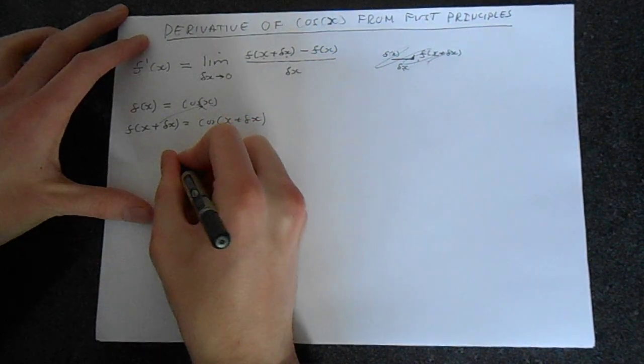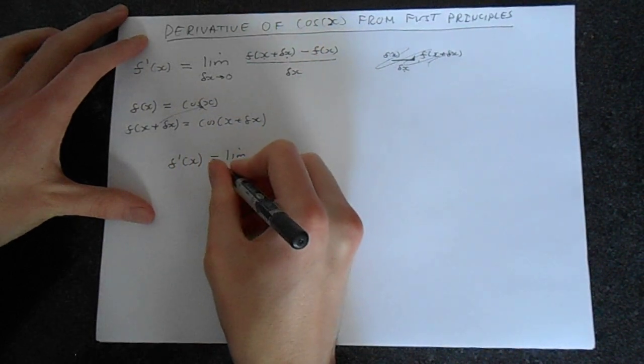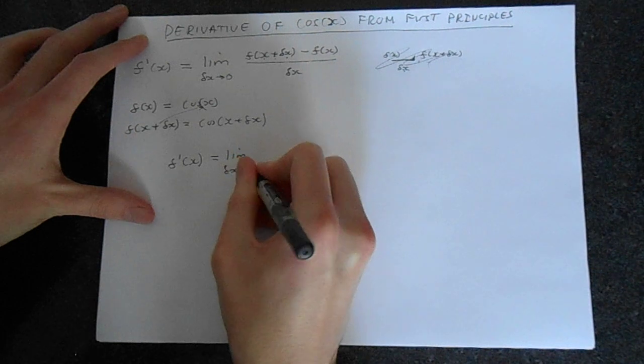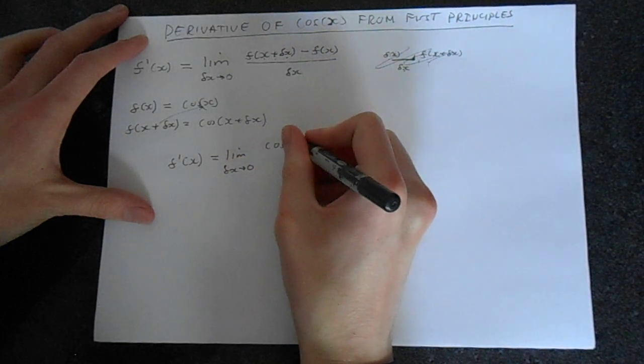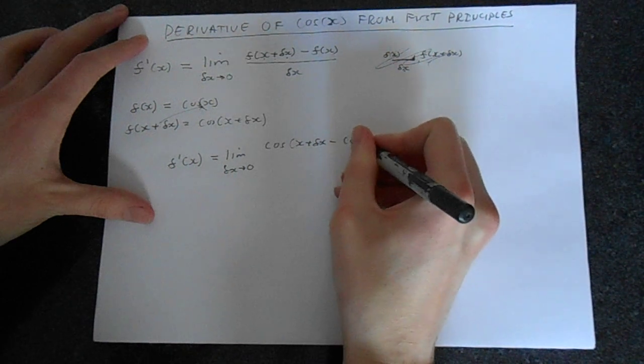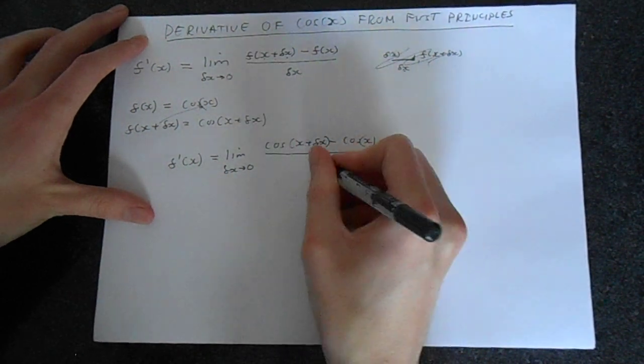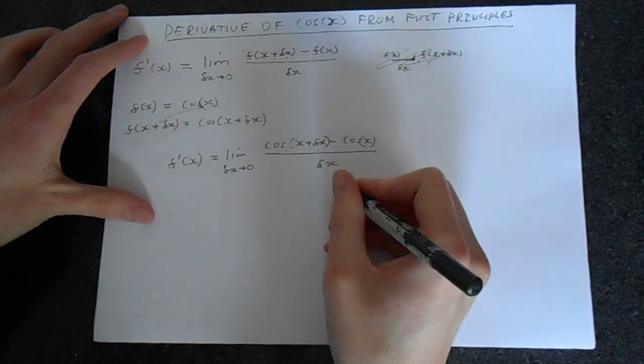So the derivative will equal the limit, just making the substitution. Delta x goes to 0 of cos of x plus delta x minus cos x. Better close the brackets here. Divide that by delta x.